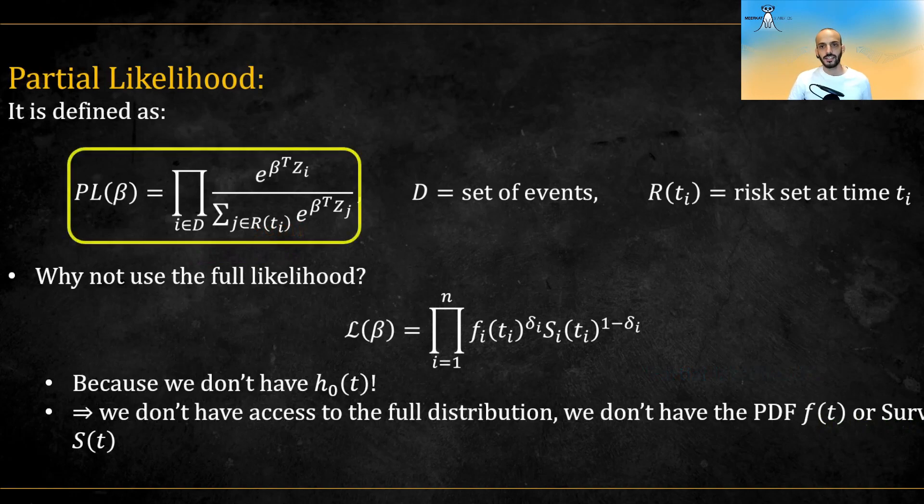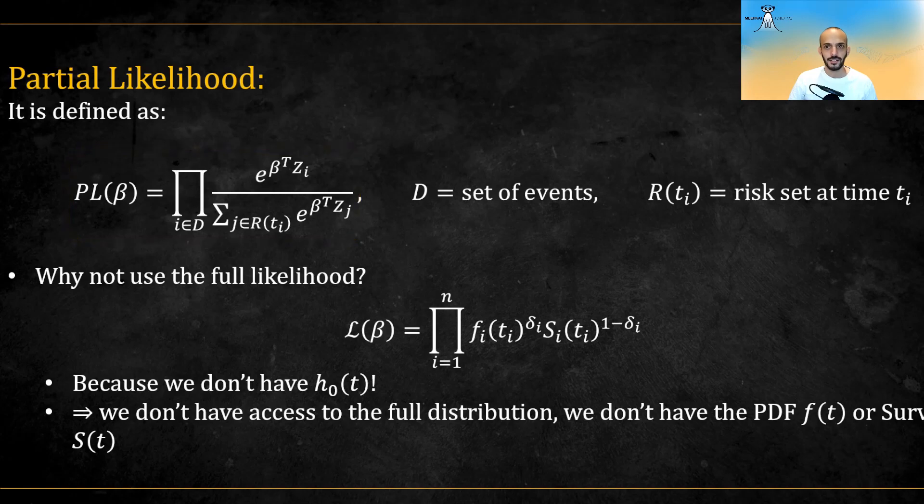The partial likelihood is defined to be this quantity. We go over each event and take this quantity in the numerator for the z's of the subject who actually experienced the event and divide by the sum of all the subjects still at the risk set at the time of the event. That is, all the subjects who still did not experience an event or a censor. Then we take the product of z's over the whole set of events.